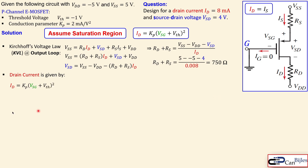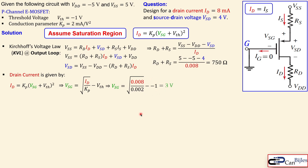In saturation, the drain current formula gives VSG = sqrt(ID / Kp) + |Vth|. Substituting ID = 0.008 A and Kp = 0.002 A/V², the square root term equals two, and adding the threshold voltage magnitude of one volt gives VSG = three volts.